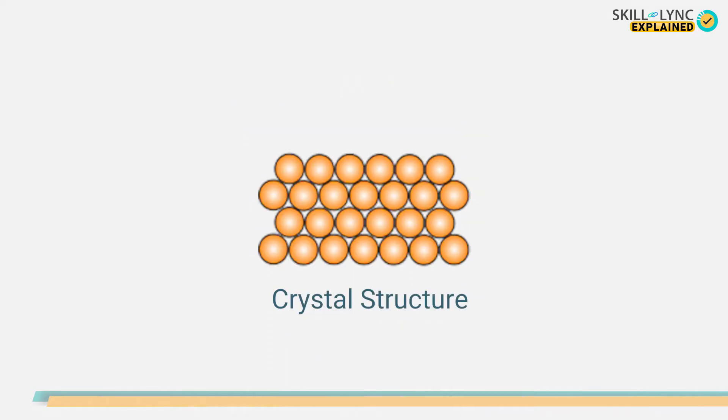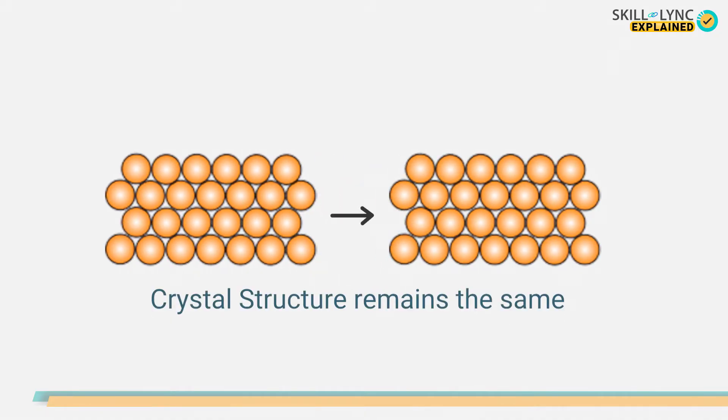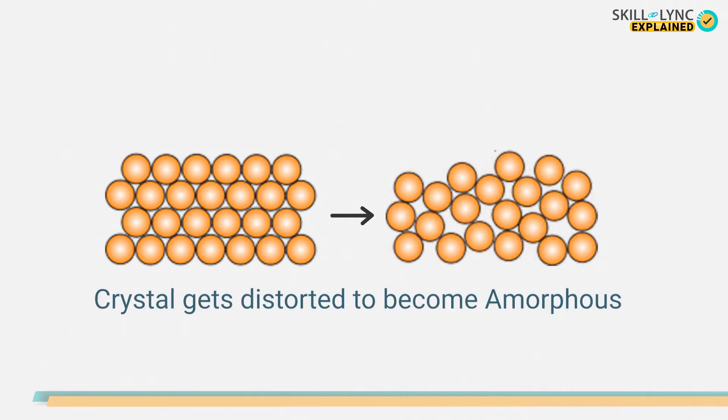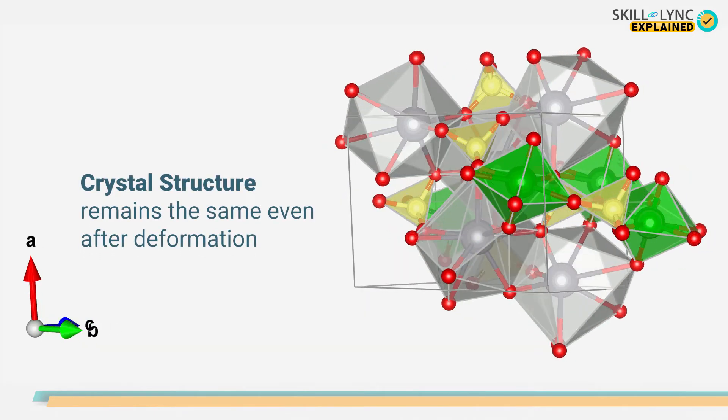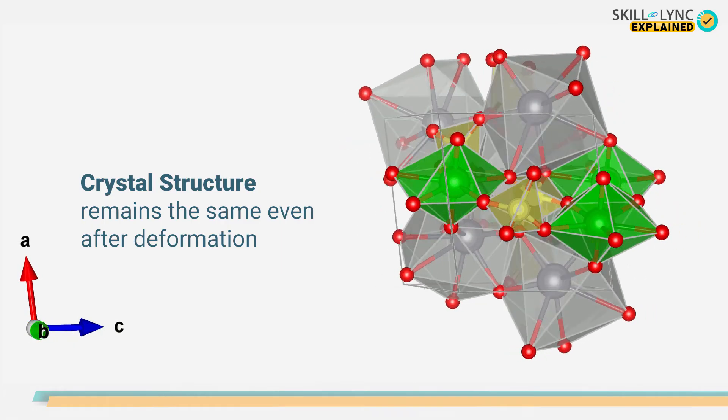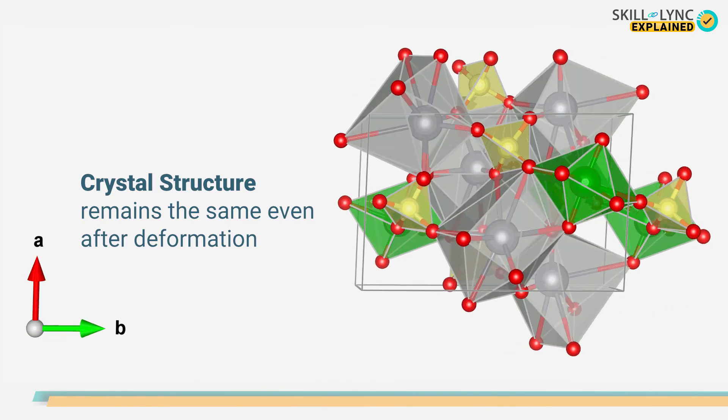Well, there are three possibilities for a crystal to deform. The crystal structure may either change, remain the same, or it may get distorted to become amorphous. The X-ray diffraction experiment of crystals shows that the crystal structure remains the same after deformation as well.